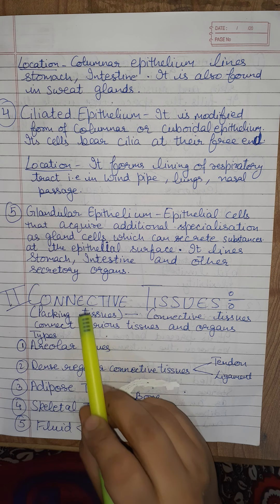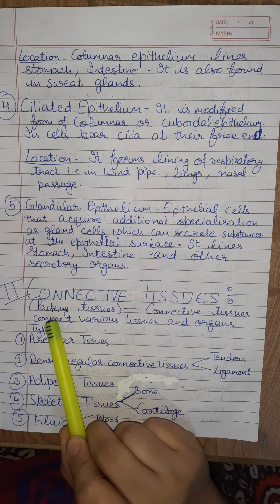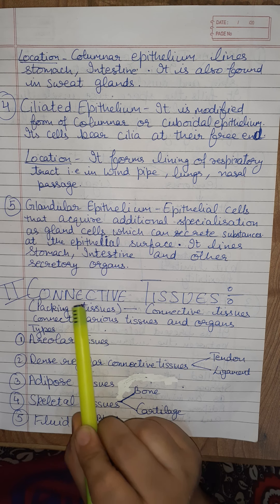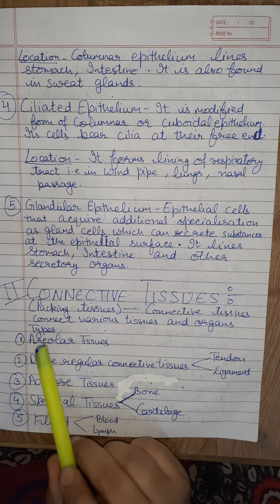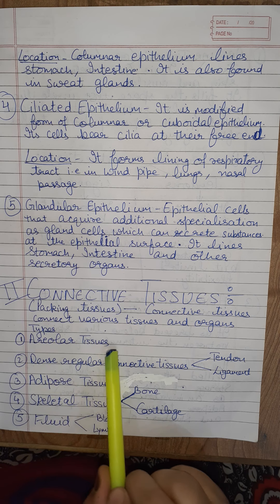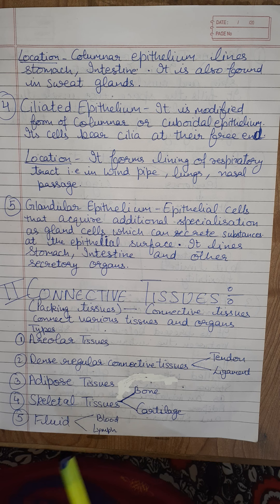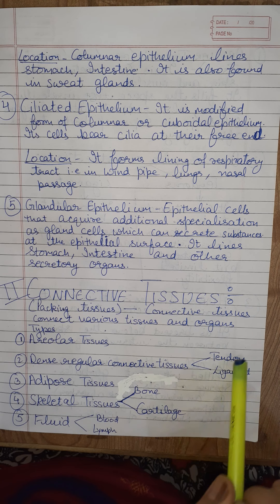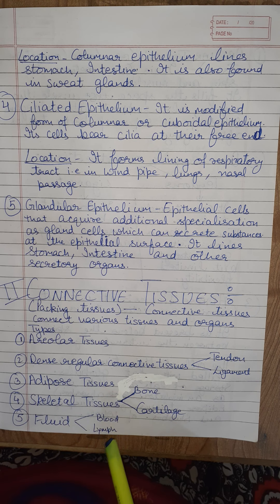Now we start with the next category — connective tissues, also known as packing tissues. Their main function is to connect various tissues and organs. These are of five main types: areolar tissues, dense regular connective tissues, adipose tissues, skeletal tissues, and fluid. Dense regular connective tissues are of two types: tendon and ligament. Skeletal tissues are of two types: bone and cartilage. Fluid is of two types: blood and lymph. We start with areolar tissues.